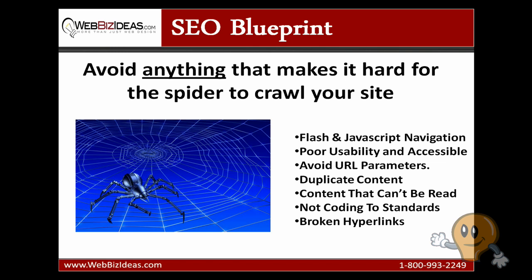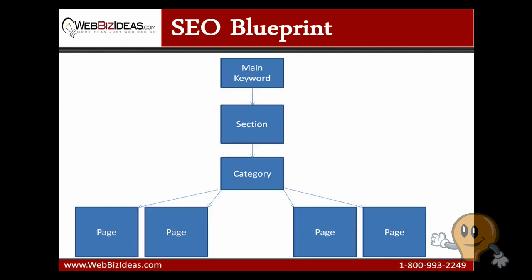Next is internal linking structure. To rank well in search engines, your website needs to be organized correctly. An SEO architect uses an SEO blueprint to clearly explain to the programmers how sections, categories, and pages need to be strategically organized. This strategy is based on the initial keyword discovery we went over earlier. Mapping out the internal linking of a website helps create a user-friendly navigational structure.